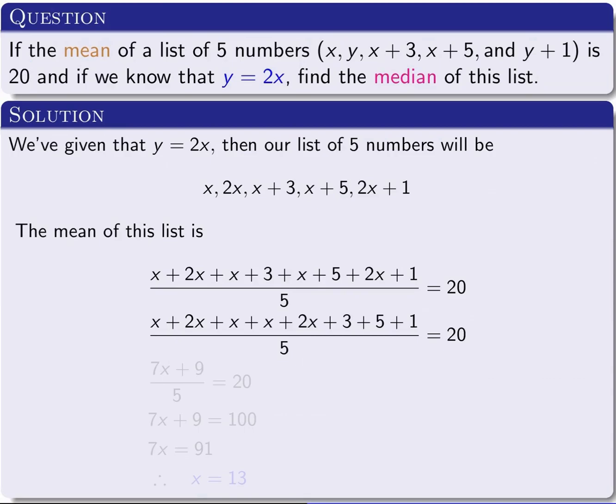In the numerator, we put all the x's together and all the constants together. So we have x + 2x + x + x + 2x, which is 7x, and we have 3 + 5 + 1, which is 9. So in the numerator, 7x+9 divided by 5 equals 20.